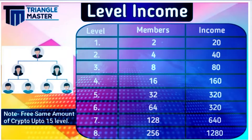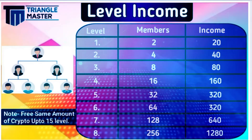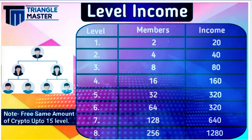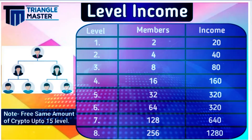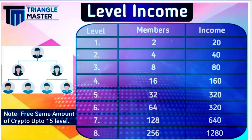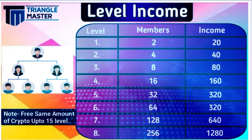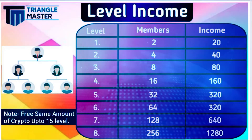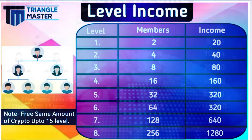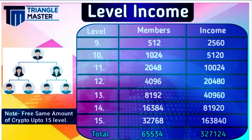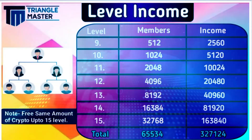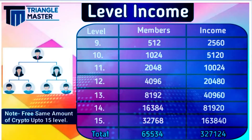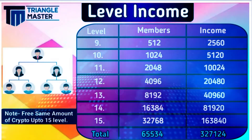Let's talk about our level plan. From the first level, 2 members get 20 rupees. From the second level, 4 members get 40 rupees. From the third level, 8 members get 80 rupees. In this way, distribution continues up to the 15th level. You can see the complete chart on the screen.